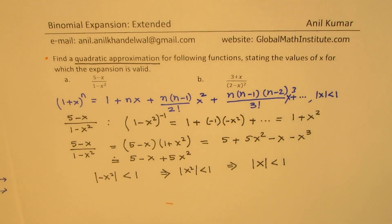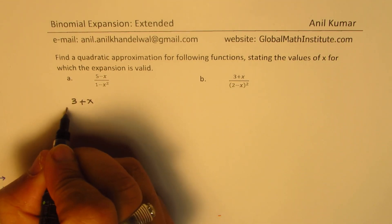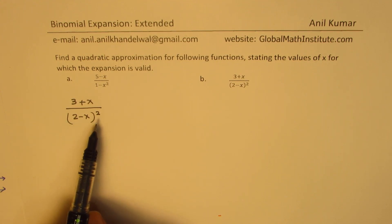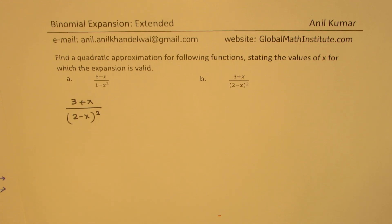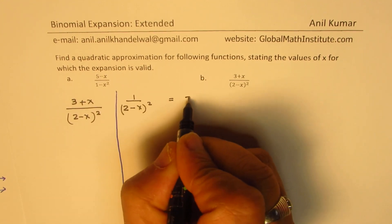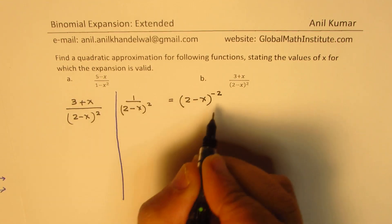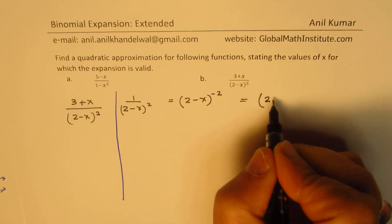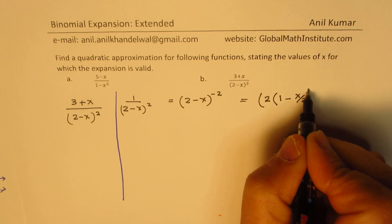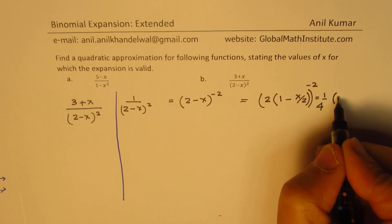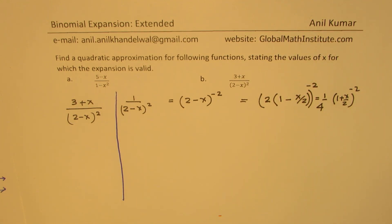Let's take up the solution for the second part, which is 3 plus x over 2 minus x whole squared. We need to work on 2 minus x whole squared and write it as a quadratic approximation. 1 over 2 minus x squared can be written as 2 minus x to the power of minus 2. We factor out 2 to get 1 over 4 times 1 minus x over 2 to the power of minus 2, which is what we'll expand.